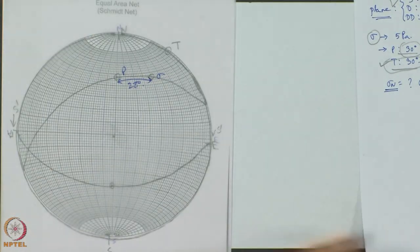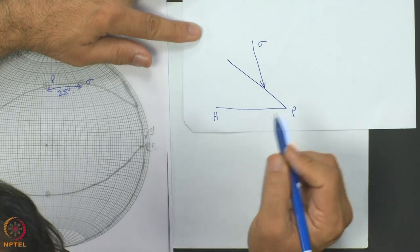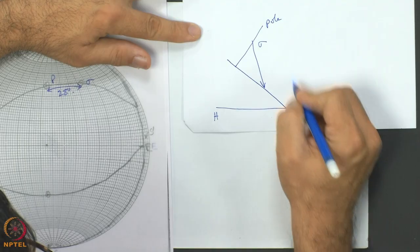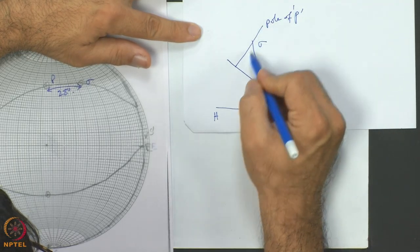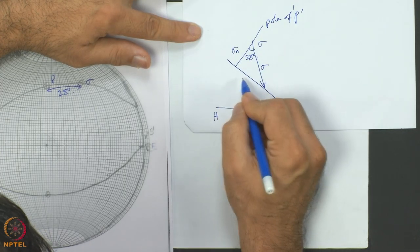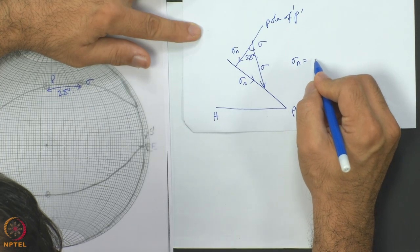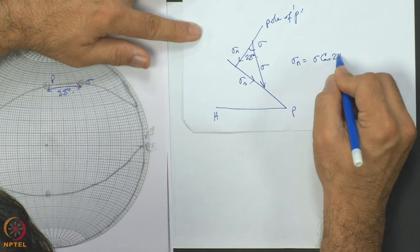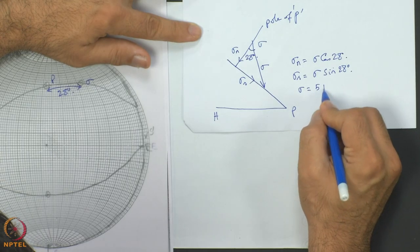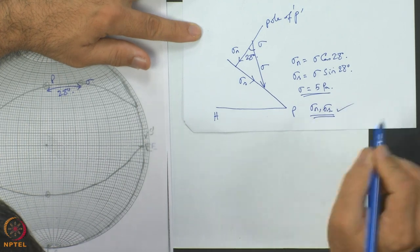So where is this 28 degree angle in my diagram? Here is a plane P and here is stress sigma acting. The pole of the plane is drawn, and the acute angle between the pole and sigma stress has been found — it is 28 degrees. So I write: sigma_n equals sigma times cos(28°), and sigma_s equals sigma times sin(28°). It was given that sigma equals 5 Pascal. Substitute in and find the cos and sin values to get sigma_n and sigma_s. In this way it is solved.